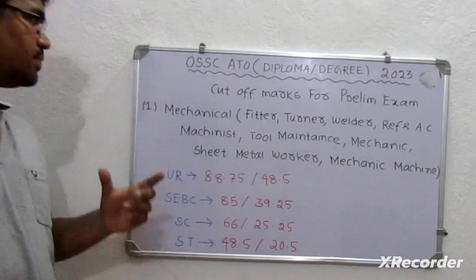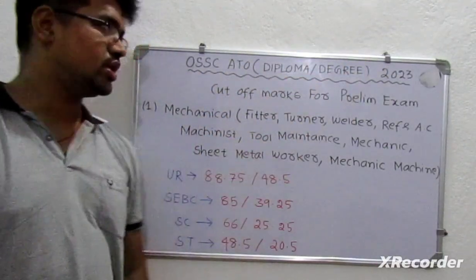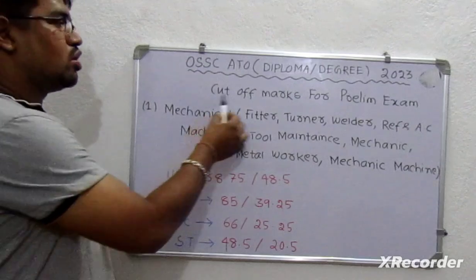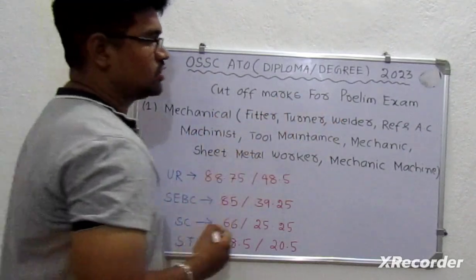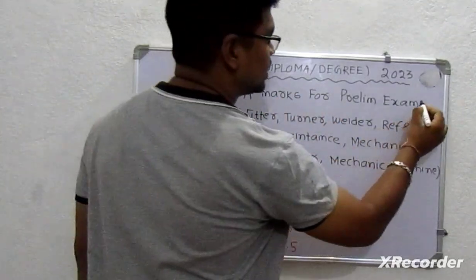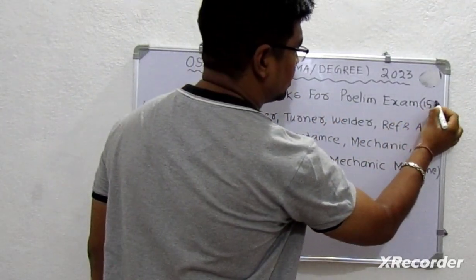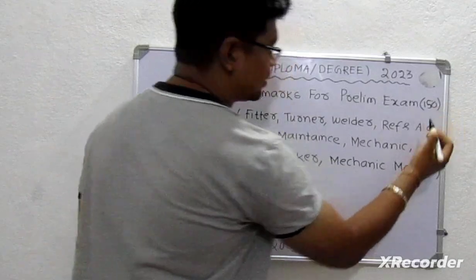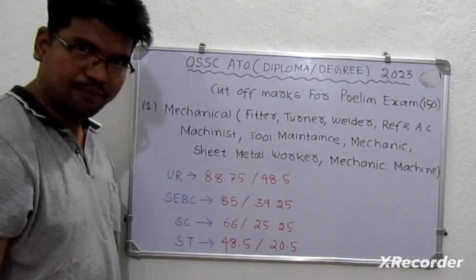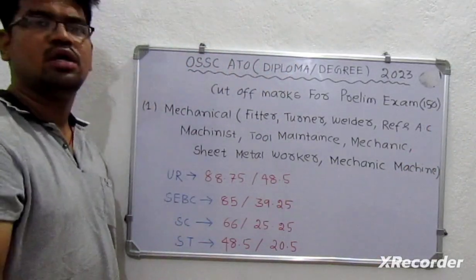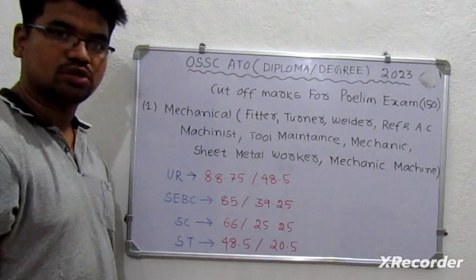First, we will discuss the OSSATO degree 2023. How did you get the exam? 150 marks, two and a half hours. We will discuss this video.